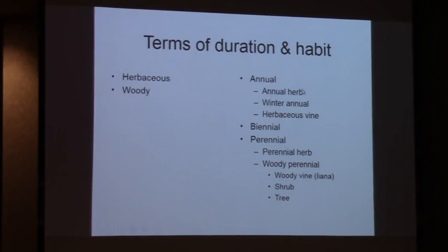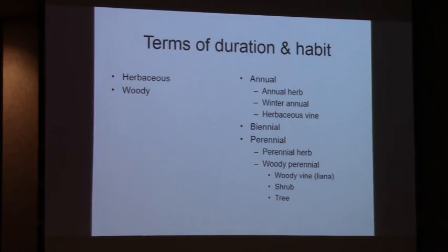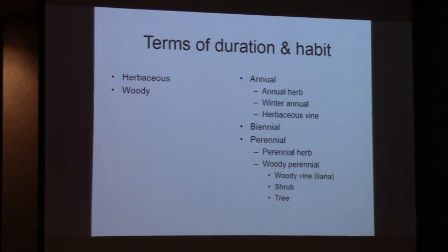Annual plants begin as a seed and within one growing season the seed germinates, forms a plant, develops to reproductive maturity, undergoes pollination, fertilization, and sets new seeds - all within one growing season, within a year or less. We have annual herbs and winter annuals - I generally treat winter annuals as annual herbs. Winter annuals are annual herbs that germinate in the fall, then overwinter as a seedling, and then the following spring they take off and mature. So it's just a variation of the annual herb life cycle.